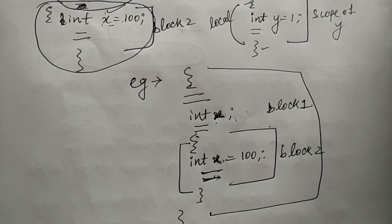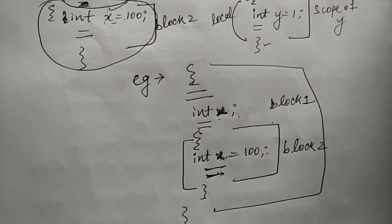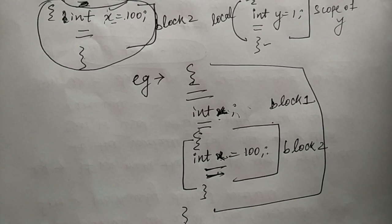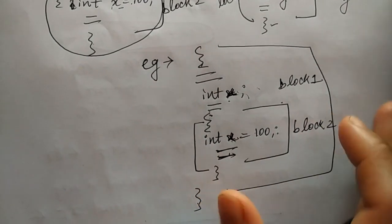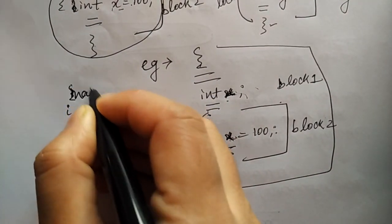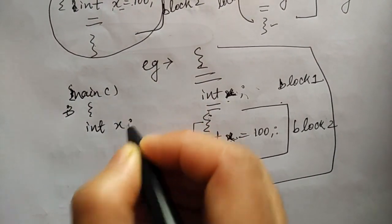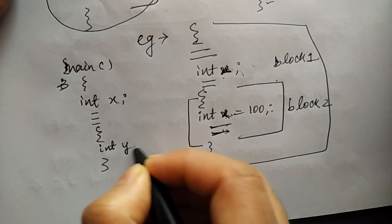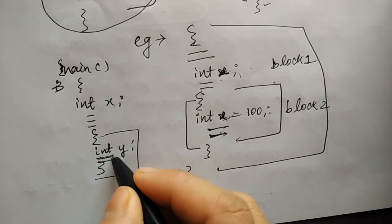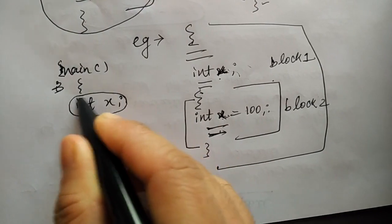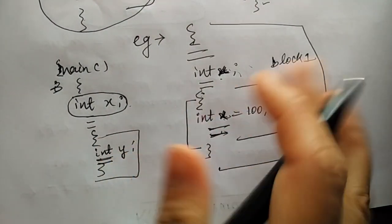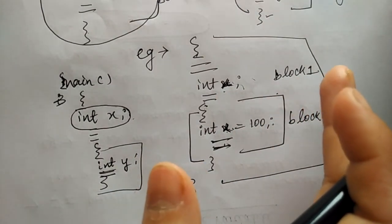In C, the global version of a variable cannot be accessed within an inner block. If you have declared something globally in C programming, it will not be accessible inside the inner block. But in C++, this problem is resolved by using the scope resolution operator. This operator allows access to the global version of a variable.